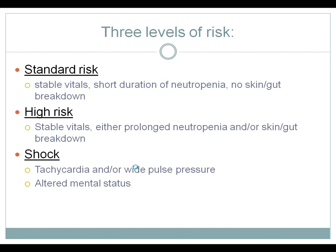Neutropenic patients should be considered in three risk groups. A standard-risk patient has stable vital signs, a relatively short duration of neutropenia or short expected future neutropenia, and no skin or gut breakdown. A high-risk patient has stable vitals but is expected to have prolonged neutropenia or has significant skin or gut breakdown. Shock is always a concern in the high-risk group and is commonly manifested by tachycardia, a widened pulse pressure, or the later finding of altered mental status.